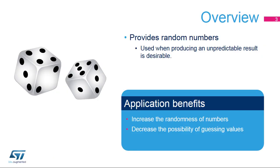The Random Number Generator, or RNG, integrated inside STM32 products provides random numbers which are used when producing an unpredictable result is desirable. Applications can benefit from the RNG to increase the randomness of numbers or to decrease the possibility of guessing certain values.